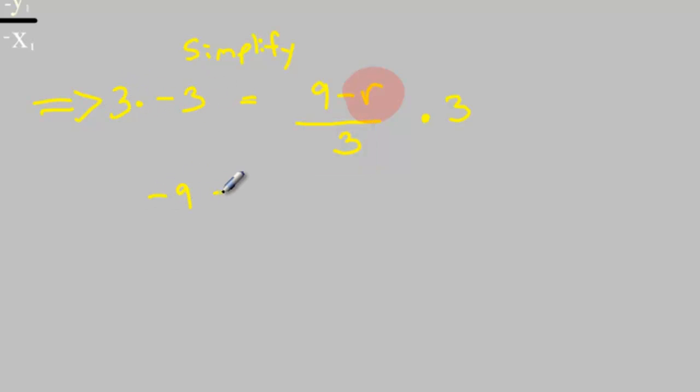And simplify from here. 3 times negative 3 is just negative 9. 3's cancel out. I'm left with a 9 minus r.